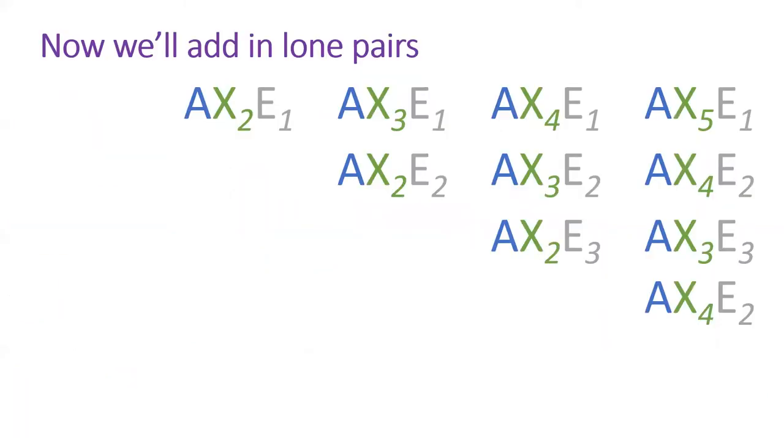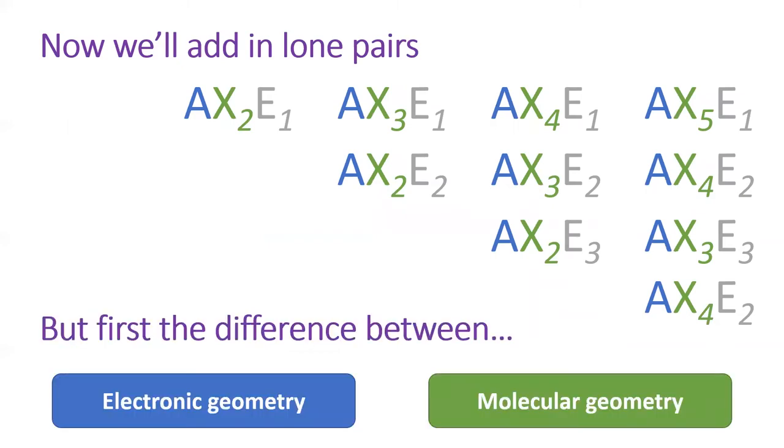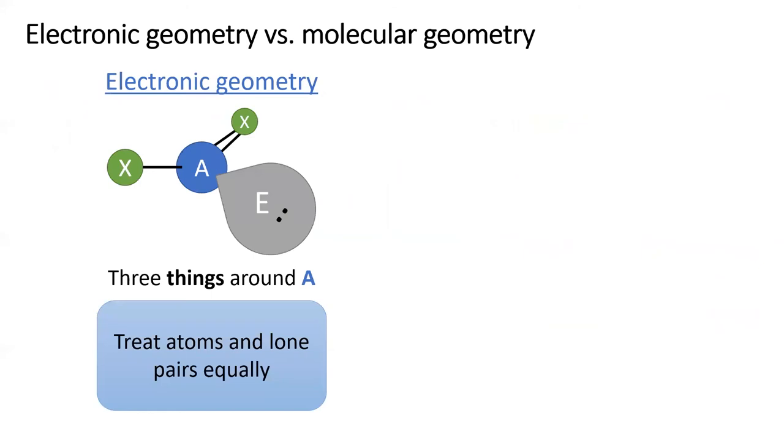Now we'll complicate things by including lone pairs. But first, we need to discuss two kinds of geometries, electron geometry and molecular geometry. The difference is whether we see the lone pairs. In the electronic geometry, we treat the lone pairs equally with the bonded atoms. So we are only concerned with the total number of things around the central atom. There are only five possible electronic geometries and we already saw all of them two slides ago.